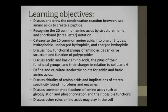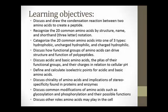Here are our learning objectives for this chapter. Be sure to review these objectives before and after studying the material as you prepare for the exam and for life after the test. Of the first three learning objectives, we need to recognize the 20 amino acids by structure, name, and shorthand — meaning you need to memorize the different amino acid structures, their full name, and their three-letter notation. You also need to categorize each amino acid into one of three categories that we will discuss shortly.